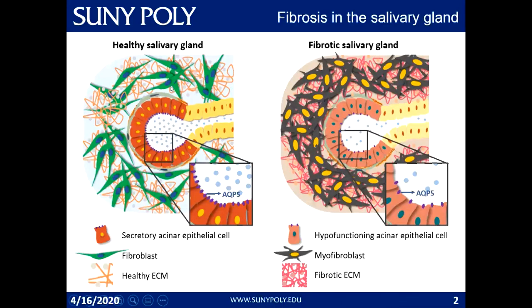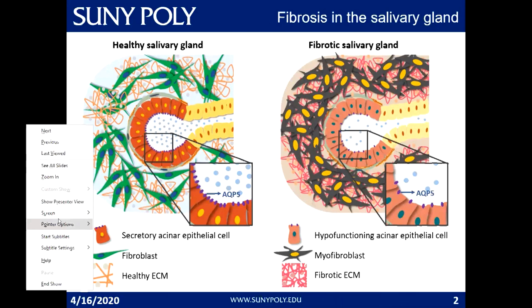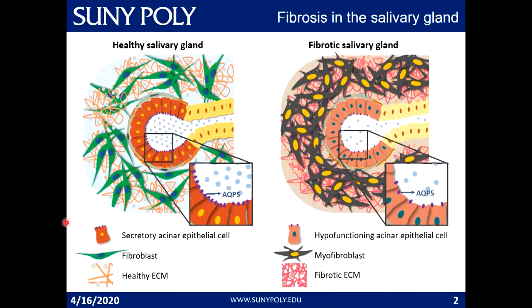Fibrosis is a chronic condition that can occur in any part of the human body. It is essentially wound healing gone wrong. Whenever there's an injury in the body, something called extracellular matrix is deposited and cells come and infiltrate that region to form the functional part of the gland. Cells are not free floating — they're embedded in this matrix that provides key mechanical and biochemical cues. When there's an injury, there's ECM deposition to fill that void.